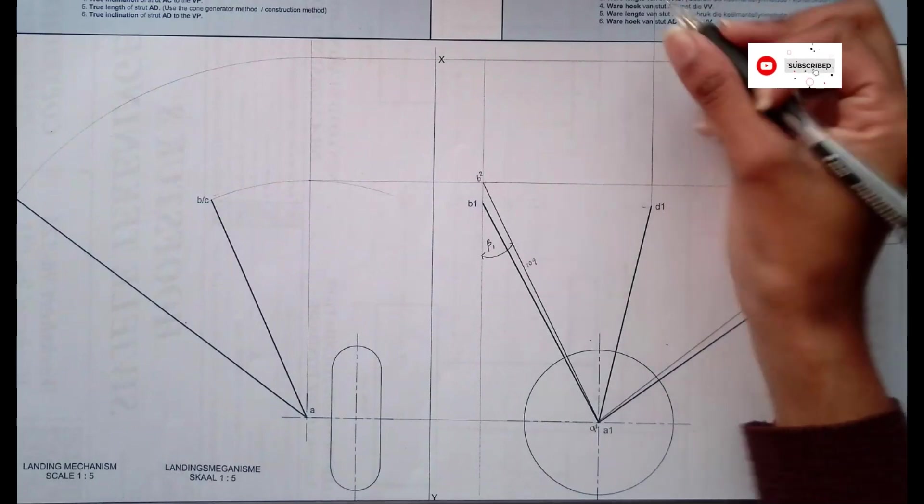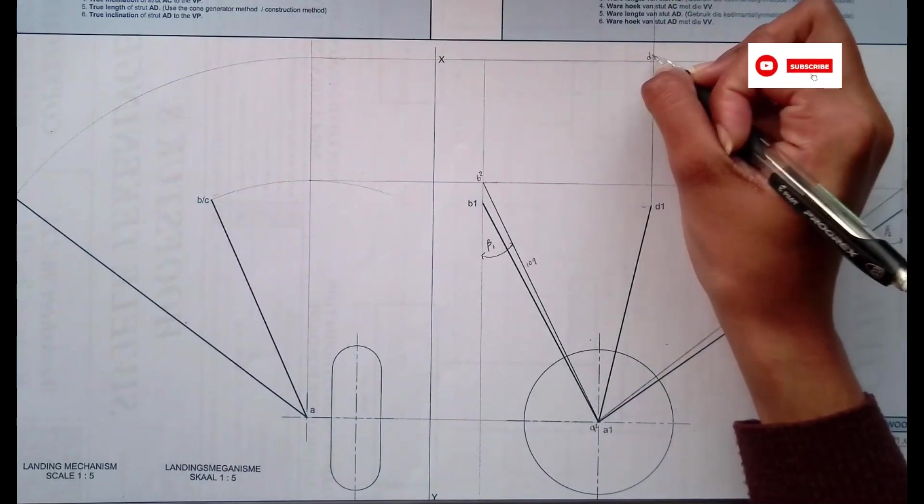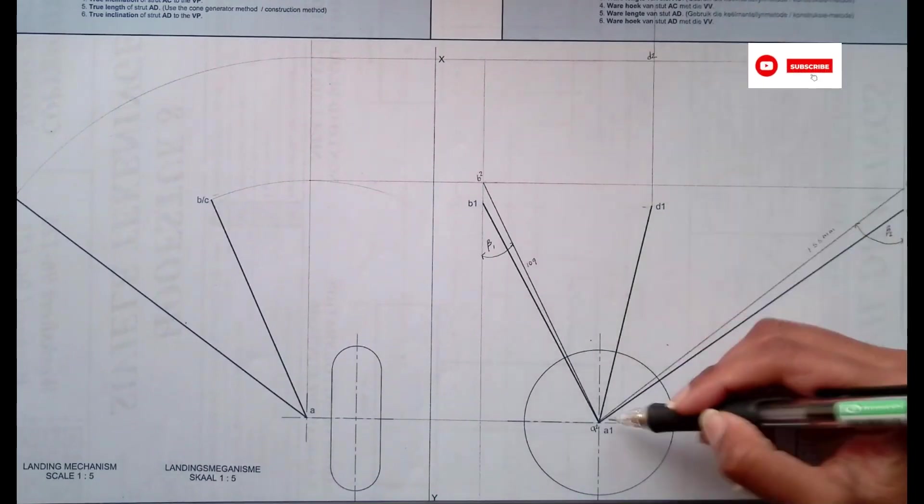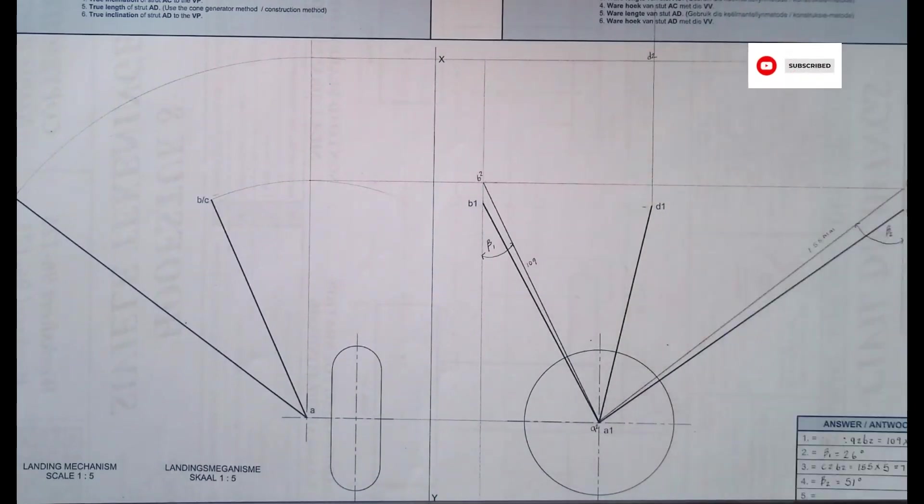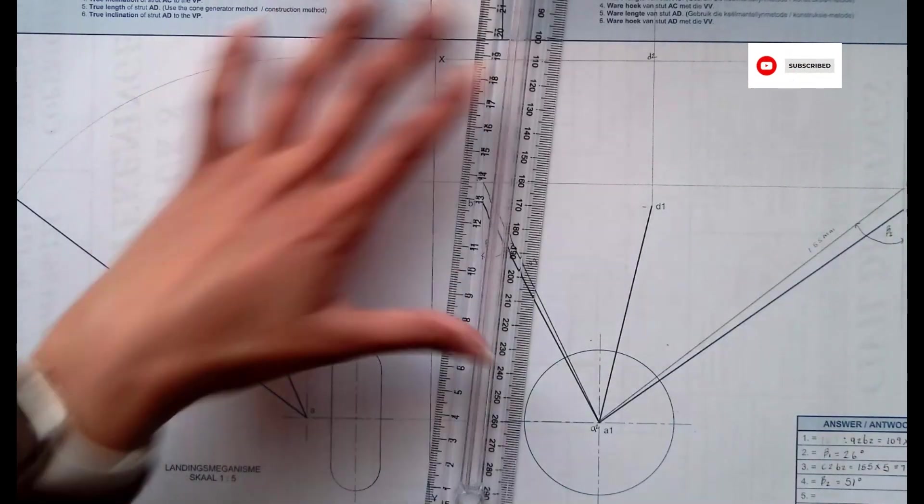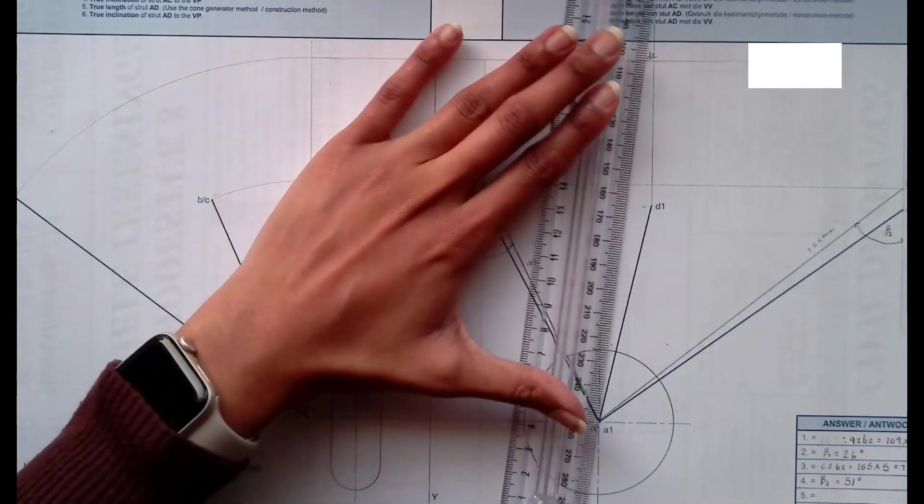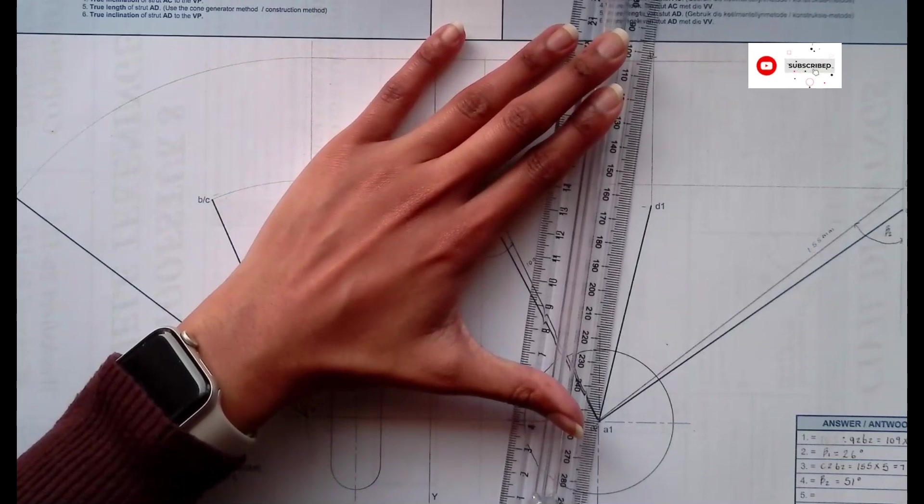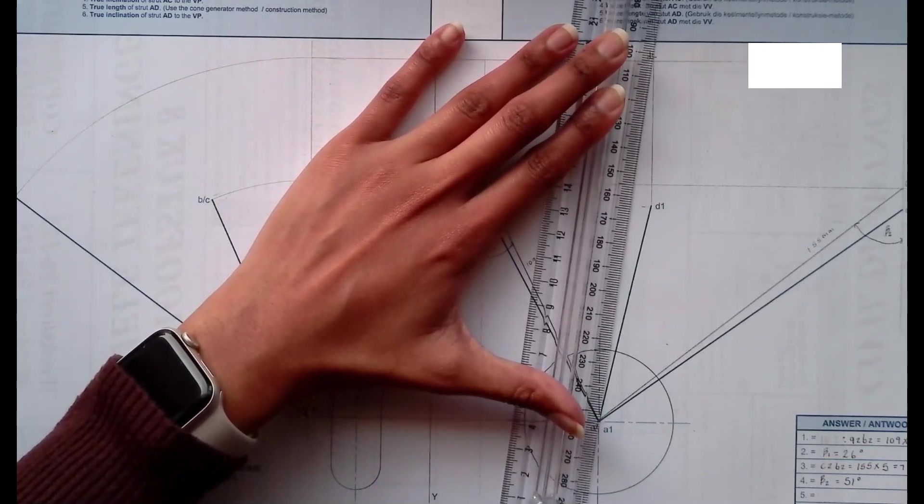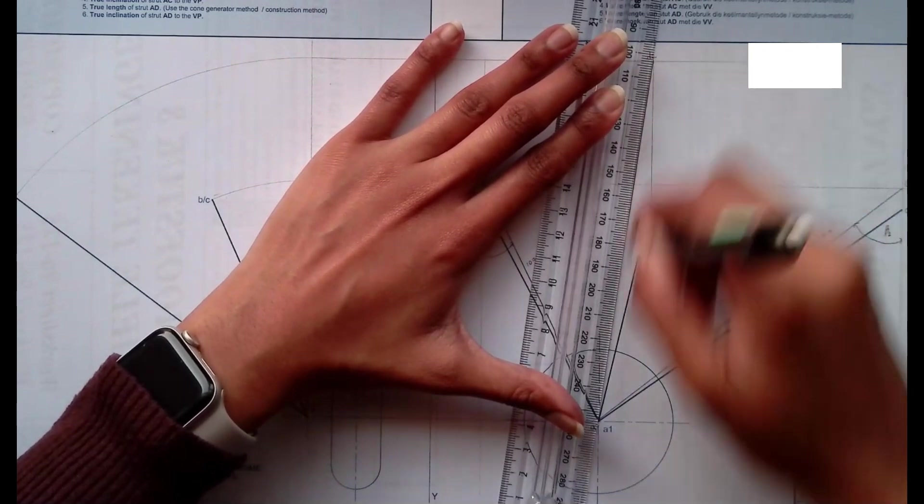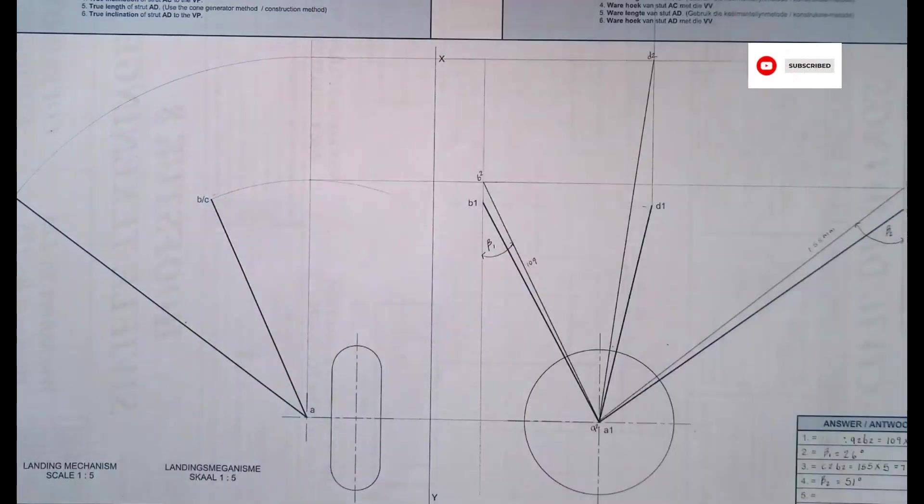So there is your D2 here. D2, you join it with A2. So you are now going to take your A2 to D2. Make sure that it's straight. And there it is.